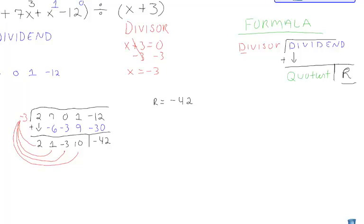Now the next thing we have to do is find our quotient, so I'm going to rewrite those numbers, being 2, 1, negative 3, and 10. First thing we have to remember is the last number never has an x. That being said, he has 0 x's, and from there we're going to count forward.